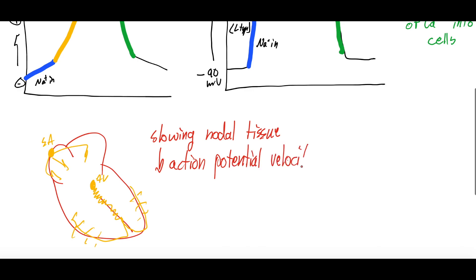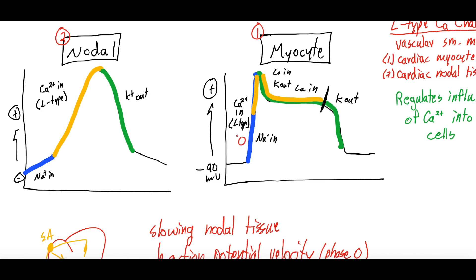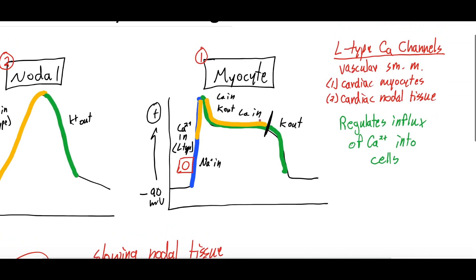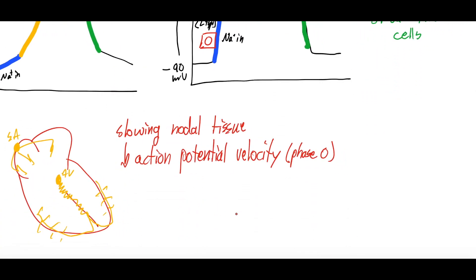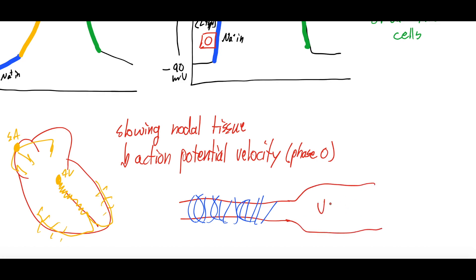So they affect both the nodal tissue and the cardiac myocytes themselves, and that will affect phase 0 of the cardiac myocyte — the initial depolarization slope. Now, the third site is vascular smooth muscle. We also get smooth muscle relaxation. If we look at an artery wrapped in smooth muscle, that smooth muscle either relaxes causing vasodilation or contracts causing vasoconstriction. With calcium channel blockers, they affect smooth muscle and can lead to vasodilation of the blood vessels.